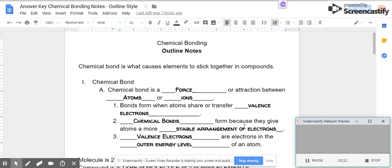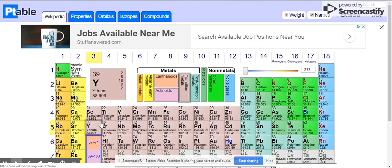So chemical bonds. Basically, this is what lets us go from individual elements like hydrogen and oxygen to water. It's what causes these things to stick together. A chemical bond is that force or the attraction between atoms or ions. Bonds form when atoms share or transfer electrons, but specifically valence electrons. Valence electrons are the electrons in the outermost energy level of an atom. Chemical bonds form because they give atoms a more stable arrangement of electrons. There are some elements on this periodic table that are highly reactive, and there are some that are hardly reactive at all.